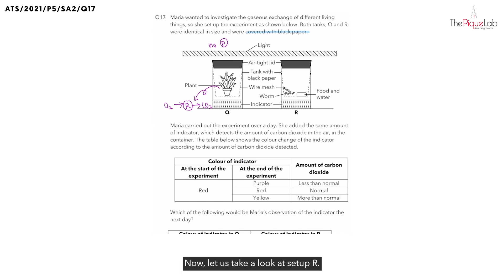Now, let us take a look at setup R. Similarly, the tank is covered with black paper. How does this affect the worms in the tank? Do the worms need light to carry out any processes? No. Hence, what process do you think the worms are carrying out? It is respiration. Which gas is taken in by the worm during respiration? Oxygen. And which gas is then given out by the worms? Carbon dioxide.